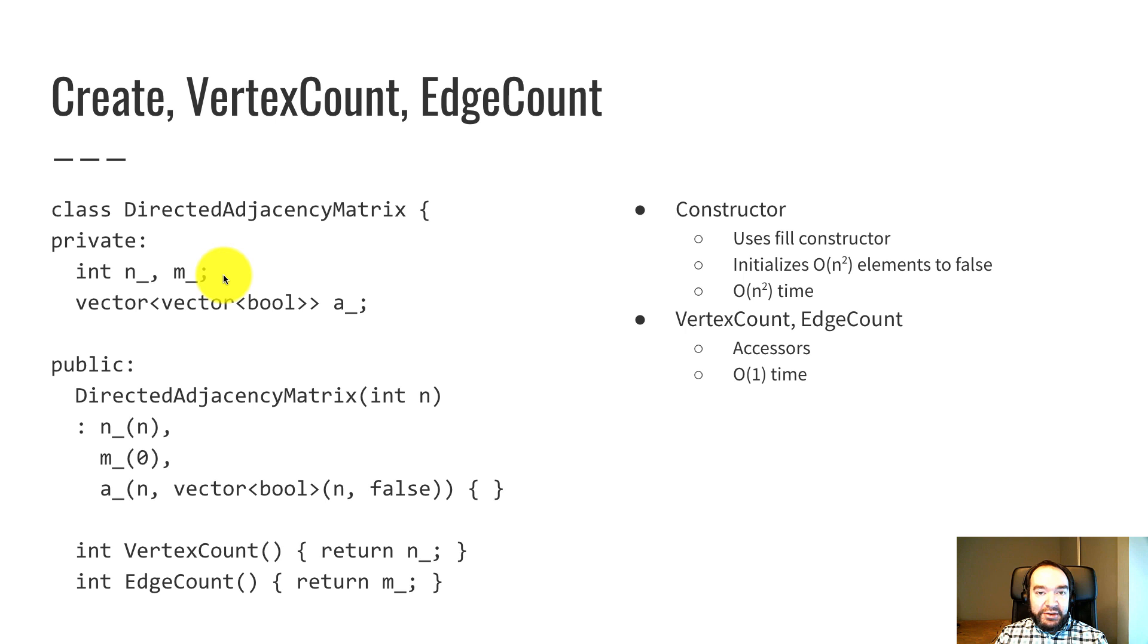And I've got ints for n and m, pretty simple, the number of vertices and edges. And then right here is my matrix. I've got a vector of vectors of booleans. This is the C++ vector way of declaring a 2D vector.